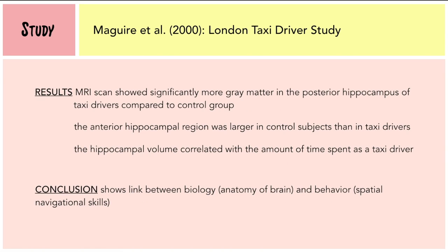The MRI scan showed more gray matter in the posterior hippocampus of the taxi drivers compared to the control group, while the anterior hippocampus was larger in control subjects than in the taxi drivers. The overall hippocampal volume correlated with the amount of time spent as a taxi driver. This study therefore shows the link between the hippocampus and spatial navigational skills, thus showing the link between the anatomy of the brain and behavior.